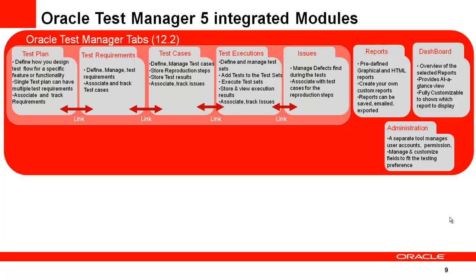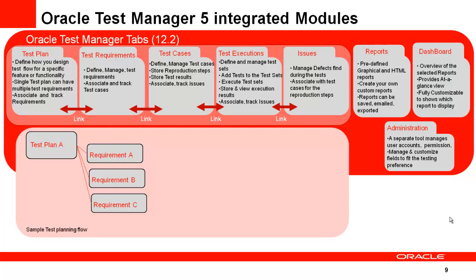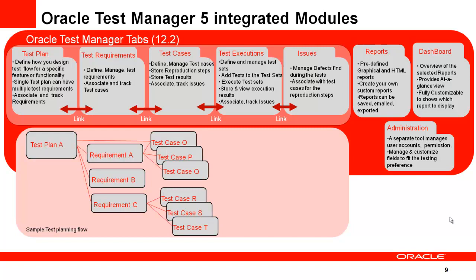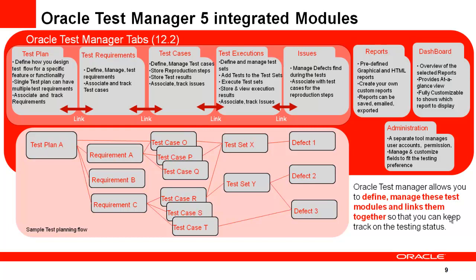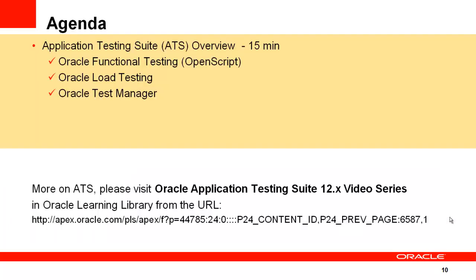This diagram shows how the different test modules are integrated within Oracle Test Manager. The Test Plan module on the left defines how you design the test flow for a specific product feature. Based on specific test requirements — and a single test plan may have multiple requirements — each requirement can have multiple test cases associated with it. Selected test cases can be executed together as a batch process. Any issues found are documented and tracked, and Oracle Test Manager links all these modules together so you can keep track of testing status.